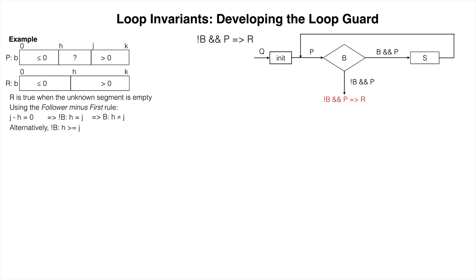Alternatively, we can say the loop should stop when h is at least j. This means b could also be h is less than j. That yields the following loop conditions.